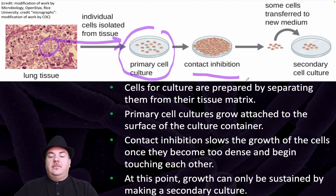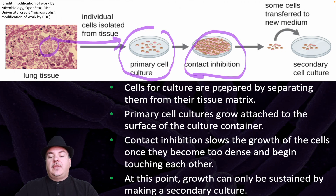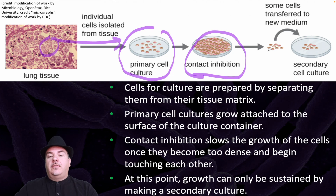Primary cell culture grows attached to the surface of the culture container. Contact inhibition slows the growth of the cells once they become too dense and begin to touch each other. At this point, growth can only be sustained by taking these cells and using them to make a secondary tissue culture.